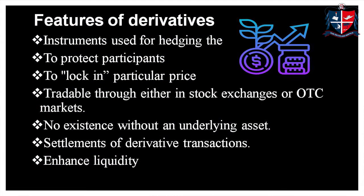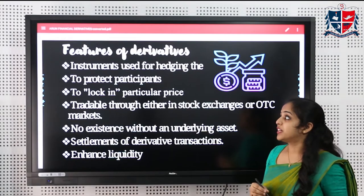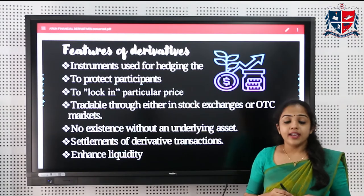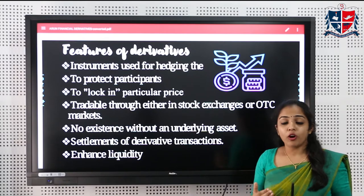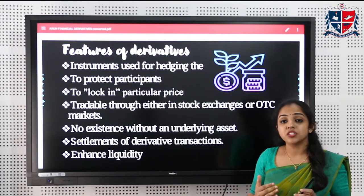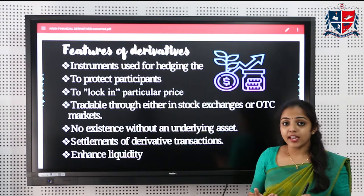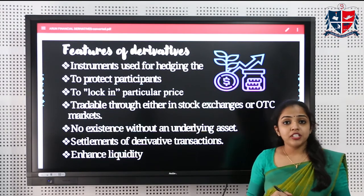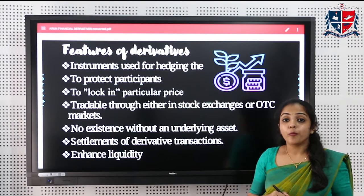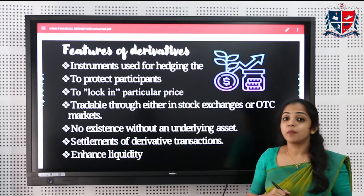Let's discuss the features of financial derivatives. The first feature is that it is an instrument to hedge the risk involved in buying and selling of an underlying asset whose prices fluctuate. The second feature is to protect market participants from adverse price movements of the underlying asset.